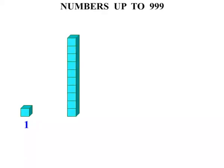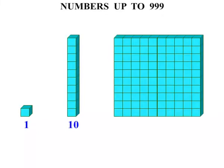This one here we will call a long which has 10 blocks. And this one here we will refer to as a flat which has 100 little blocks. So we will call them short, long and flats. You might have heard them as different names but those are the ones we will use.